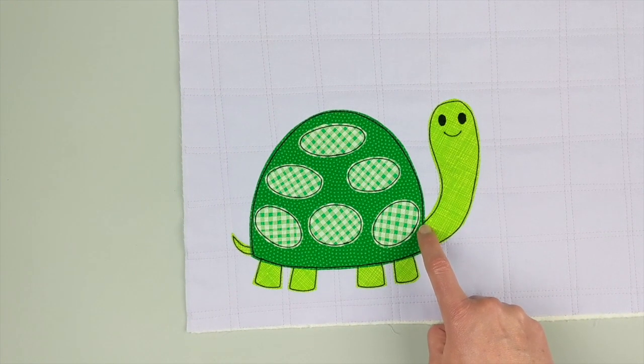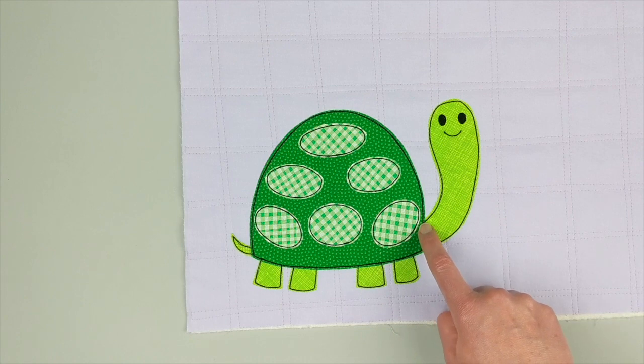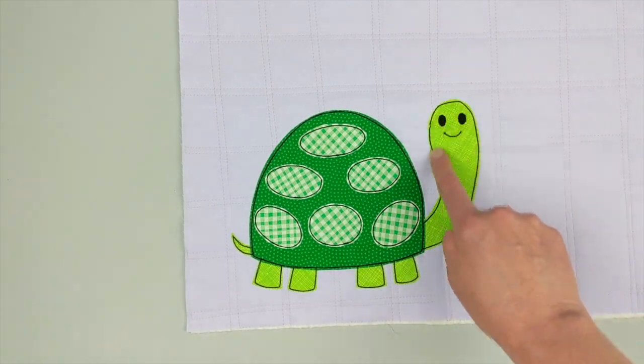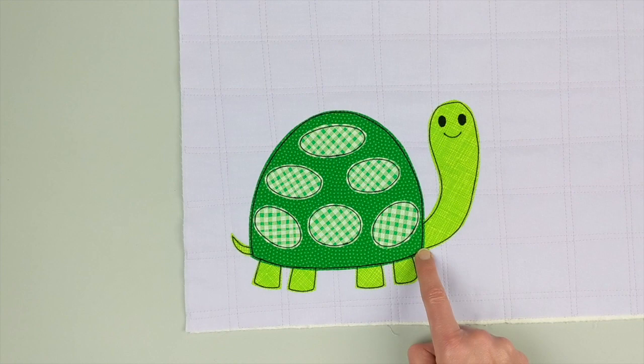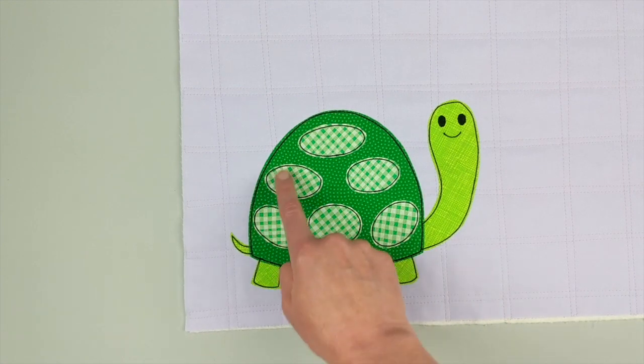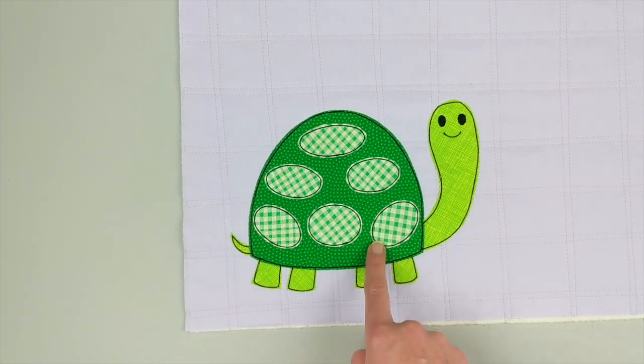I went all the way around there for the third pass around. That finished the shell. Then I just overlapped the start of my stitching just a little bit and then went one, two, and three and tied off. Then I had to do each spot individually.